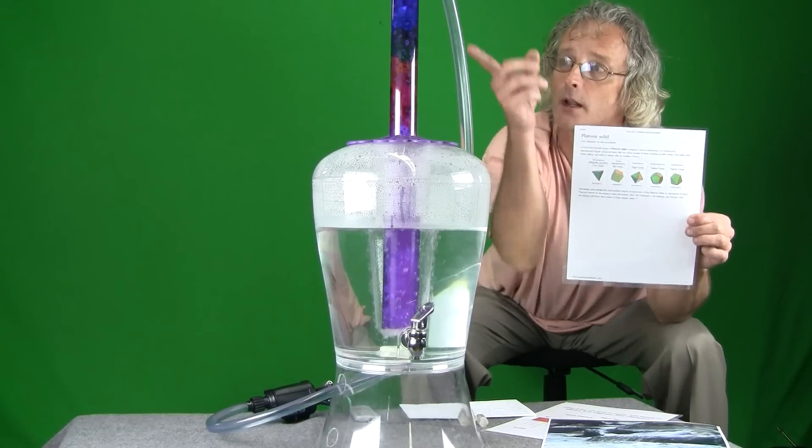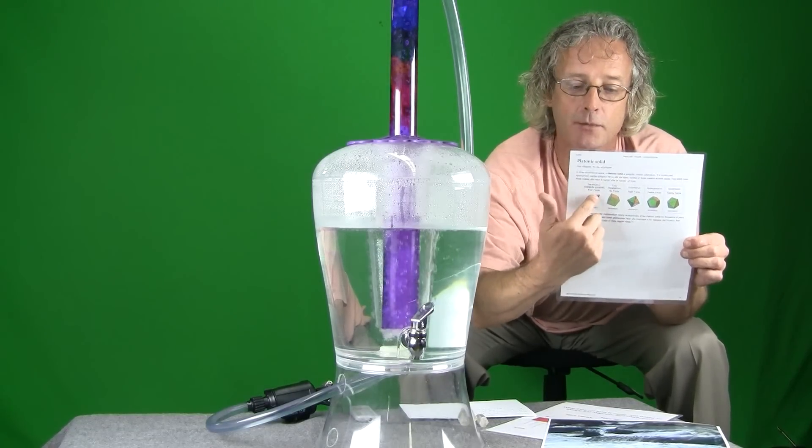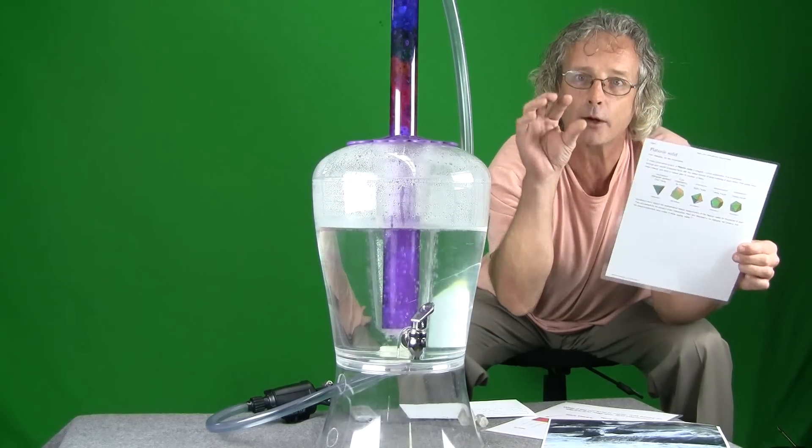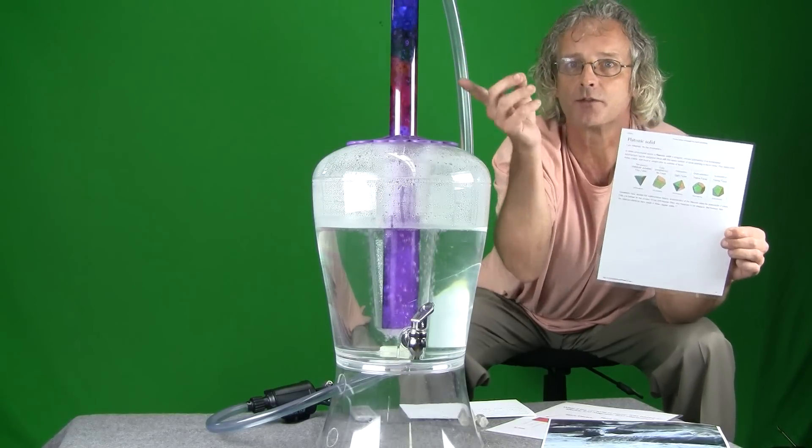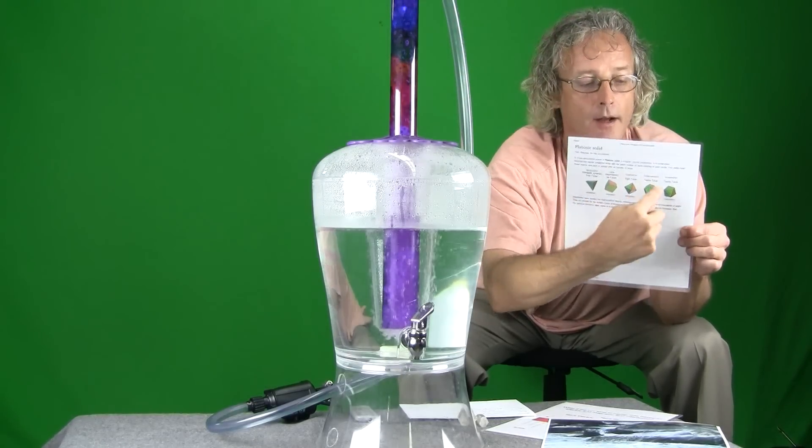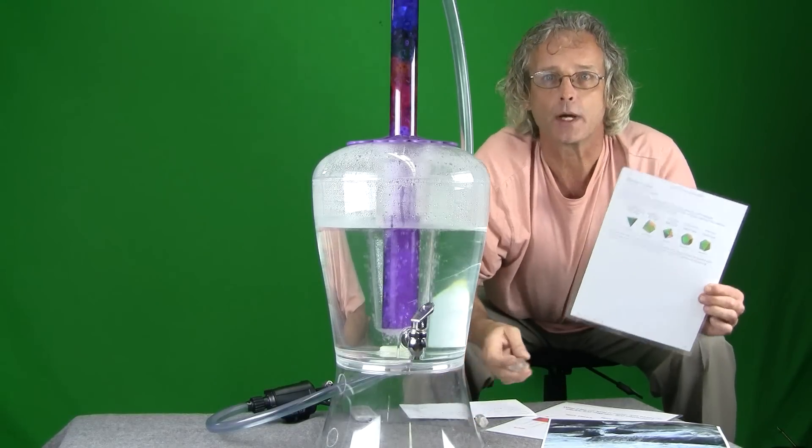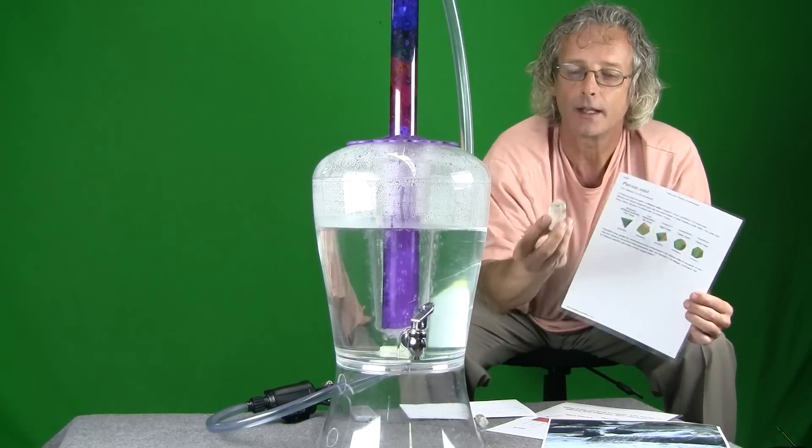Because what happens is water flows over these platonic solids. As it comes off of these geometries, these angles here, it vortexes microscopically, very tiny amounts. There are dozens and dozens of vortex actions happening in here as it runs off of these sharp angles. If you said that straight lines and sharp angles aren't found in nature, that's just not true.